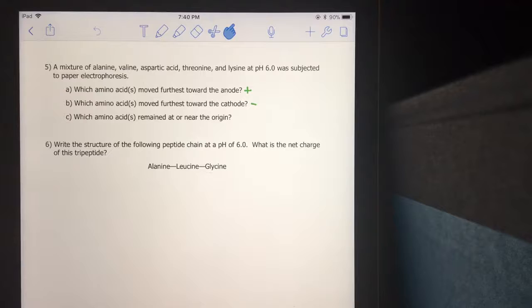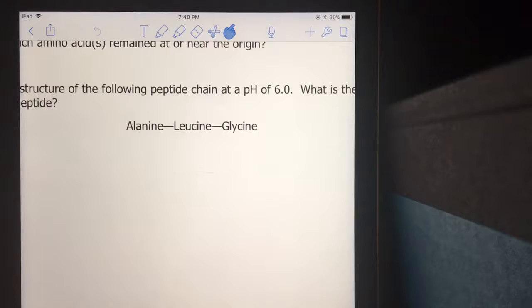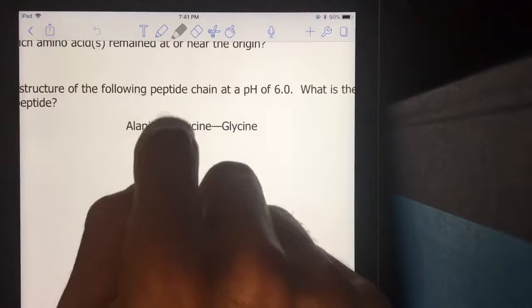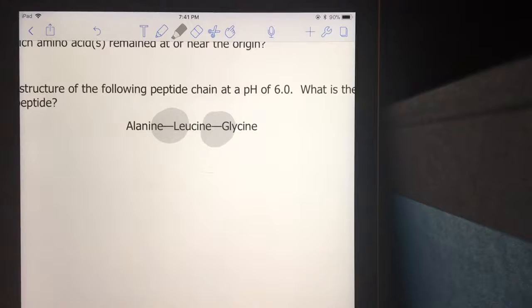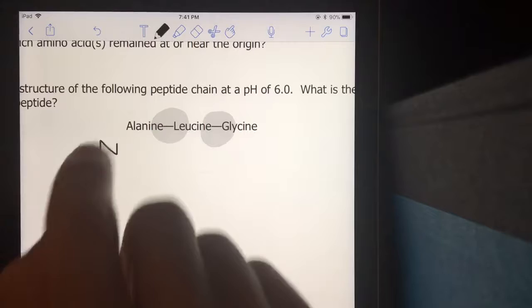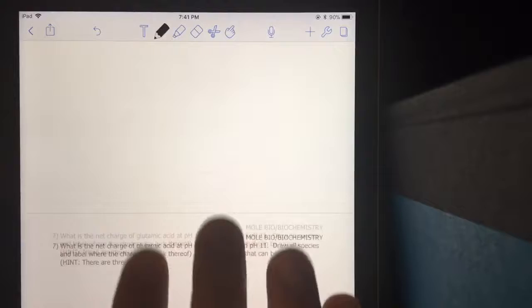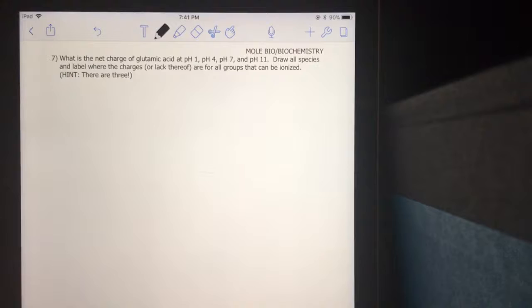For question six, I want you to draw a tripeptide. So you're having three different peptide residues: alanine, leucine, and glycine. Make sure you have the peptide bonds here between alanine-leucine and leucine-glycine. So you're not just drawing three amino acids, they're connected. Here's a hint: you only have one N-terminus on this side and one C-terminus. So remember the NCC backbone.